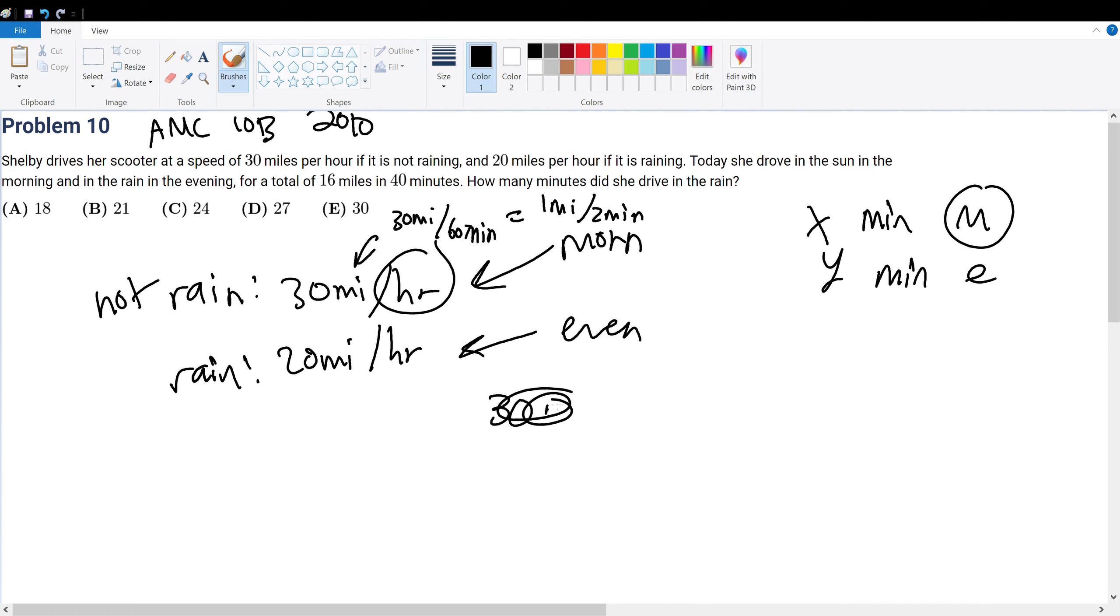that would be 1 half times x, and that would be the number of miles that she drove, plus, if we convert the same, that would be 1 mile per 3 minutes, which is 1 third y, should give you 16.